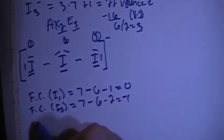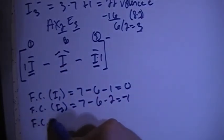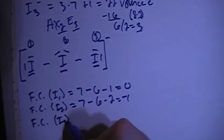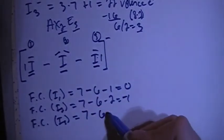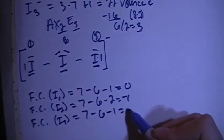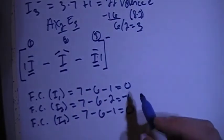The formal charge for iodine three is going to be seven valence brought in minus two, four, six non-bonding electrons minus one bond, which is an overall formal charge of zero.